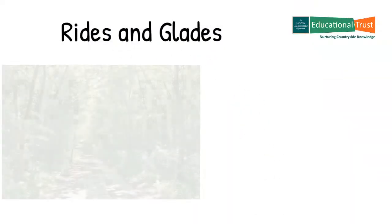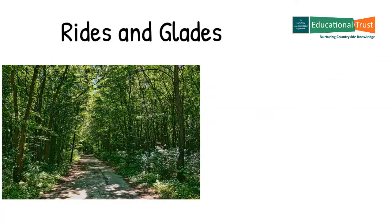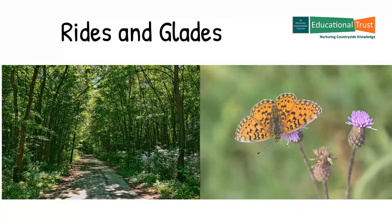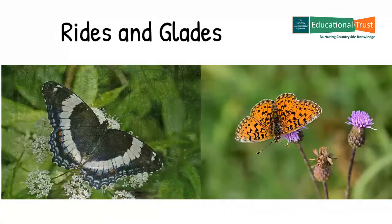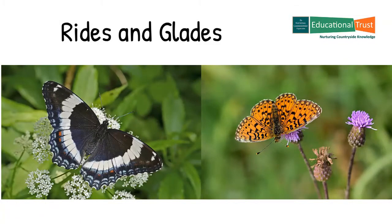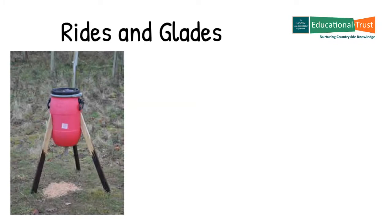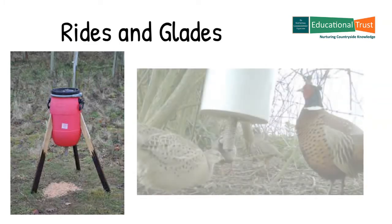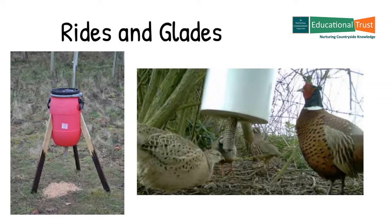A ride is a linear trackway, such as a path, designed for access. Creating a ride through a woodland creates what are called edge habitats, where the mix of sunlight, exposure and some shelter combine to create a high level of plant and animal species diversity. These edge habitats benefit many bird and insect species, including rare and declining woodland butterflies such as the small pearl-bordered fritillary and the white admiral. Gamekeepers will often provide supplementary feeding of wheat and maize in the edge habitats, via hoppers or hand spread, to provide food in the hungry gap between February and May, which particularly benefits pheasants and many other species of birds.